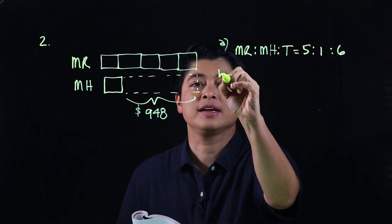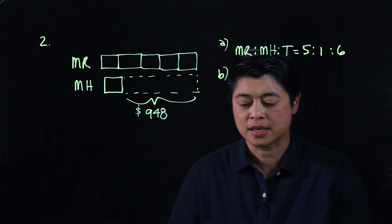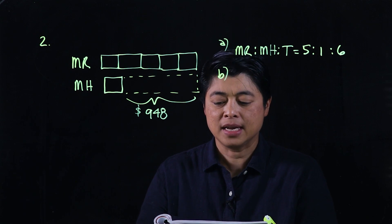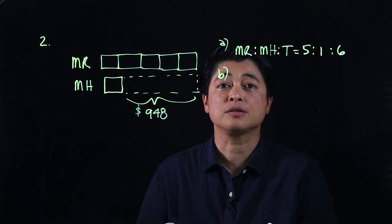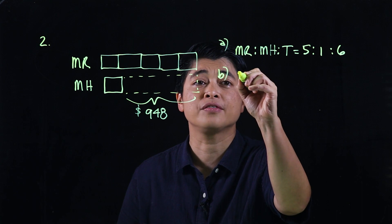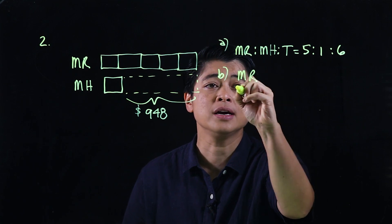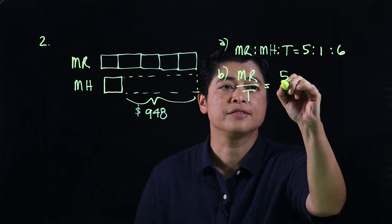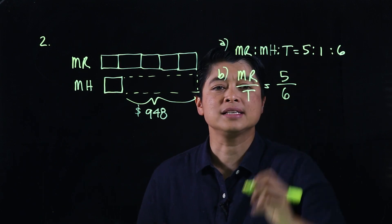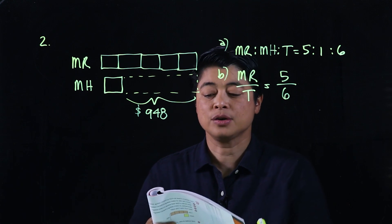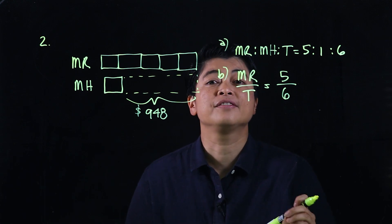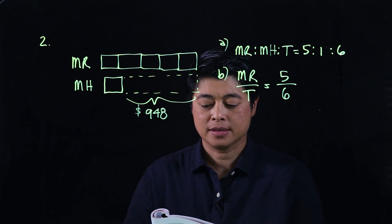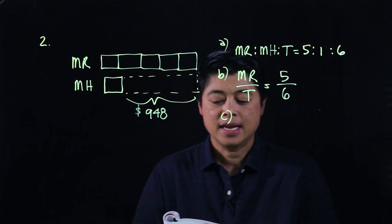Moving on to part B, it says: what fraction of the total money they spent is the money spent by Mr. Raja? So we're looking for the fraction of Mr. Raja to total. Mr. Raja is five units and the total is six units, so Mr. Raja spent five-sixths of the total.